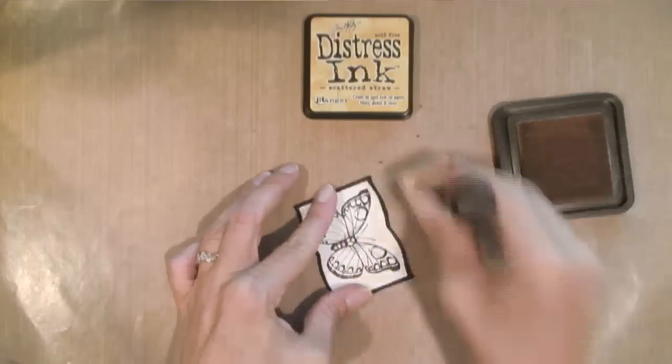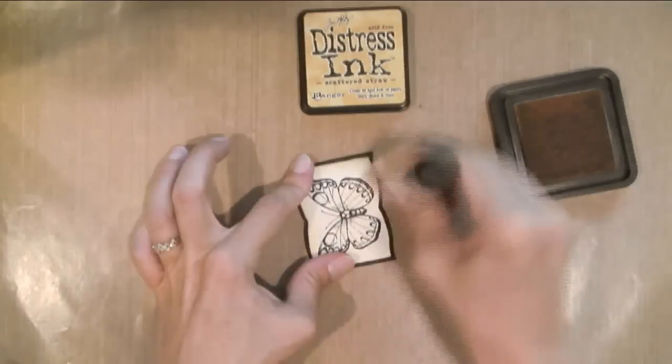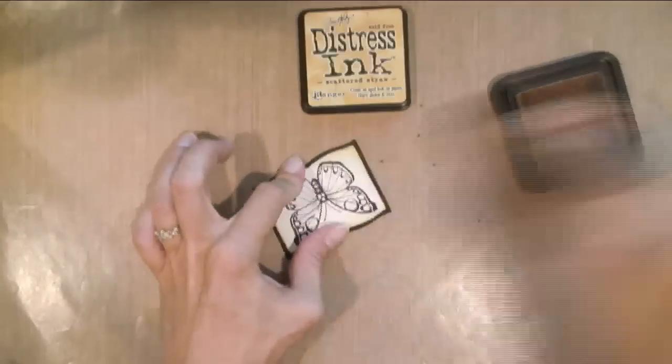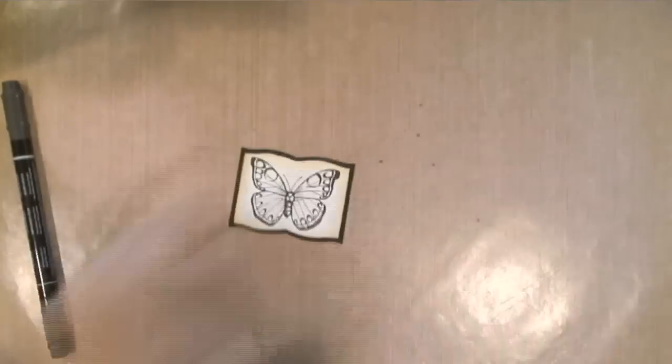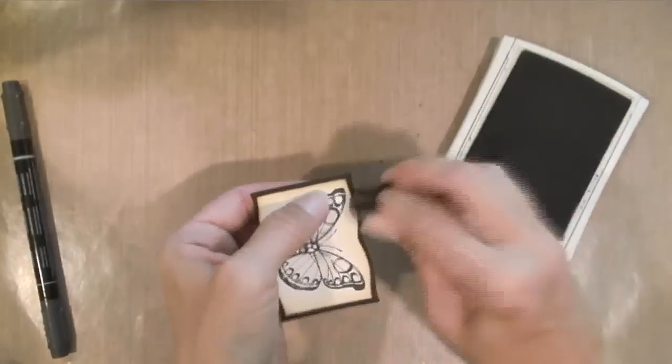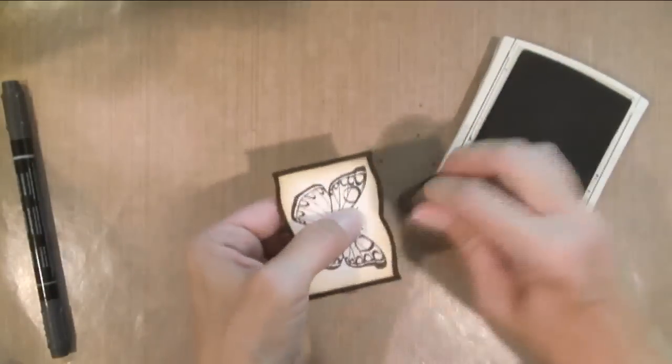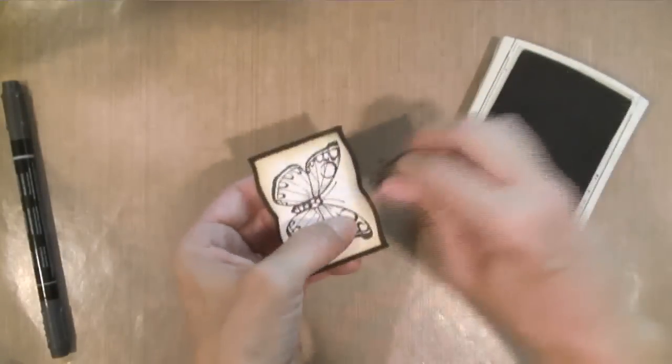First I'm going to distress my edges with a little bit of yellow, the Scattered Straw, just so it's not so stark with the black and the white. And then I'm actually going to take my Sponge Dauber, which is a little fingertip applicator, and I'm going to add some black ink just to soften that edge.